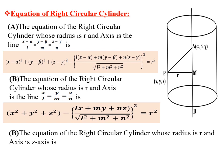Case 3: The equation of RCC whose radius is r and whose axis is the Z-axis is x² + y² = r². This is because the direction cosines of the Z-axis are (0, 0, 1). Putting l = 0, m = 0, n = 1 in the previous equation gives x² + y² = r². Similarly, we can find the equation of RCC whose axis is along the X-axis or Y-axis.